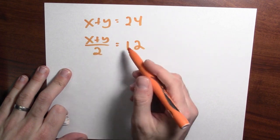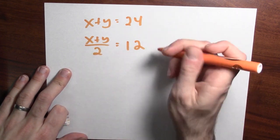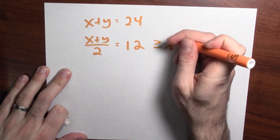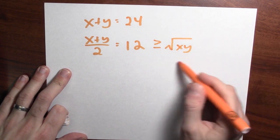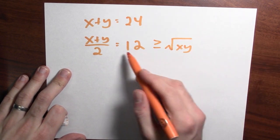But if this is their average, by the AMGM inequality, this must be bigger than or equal to the square root of x times y, the geometric mean of x and y.